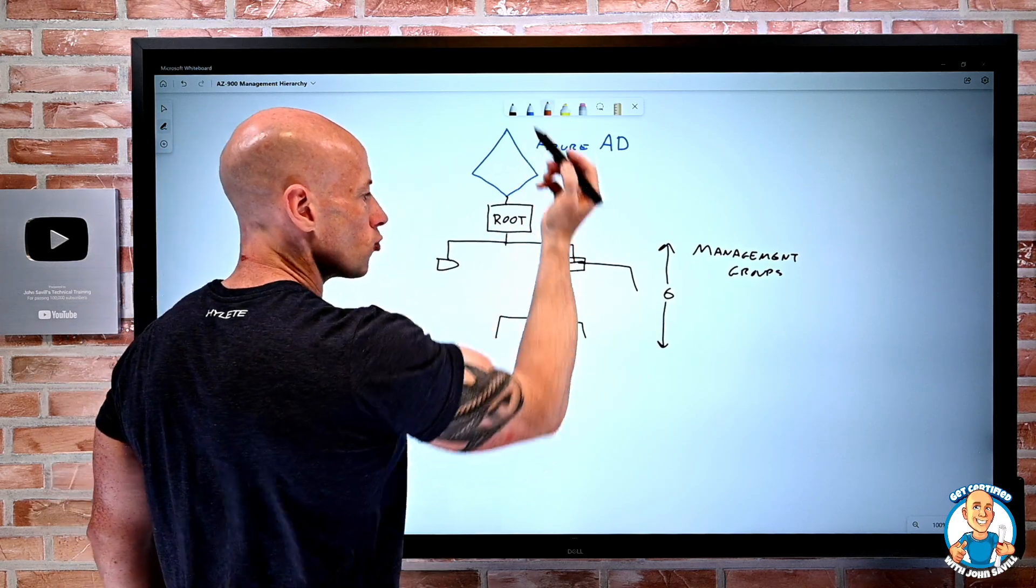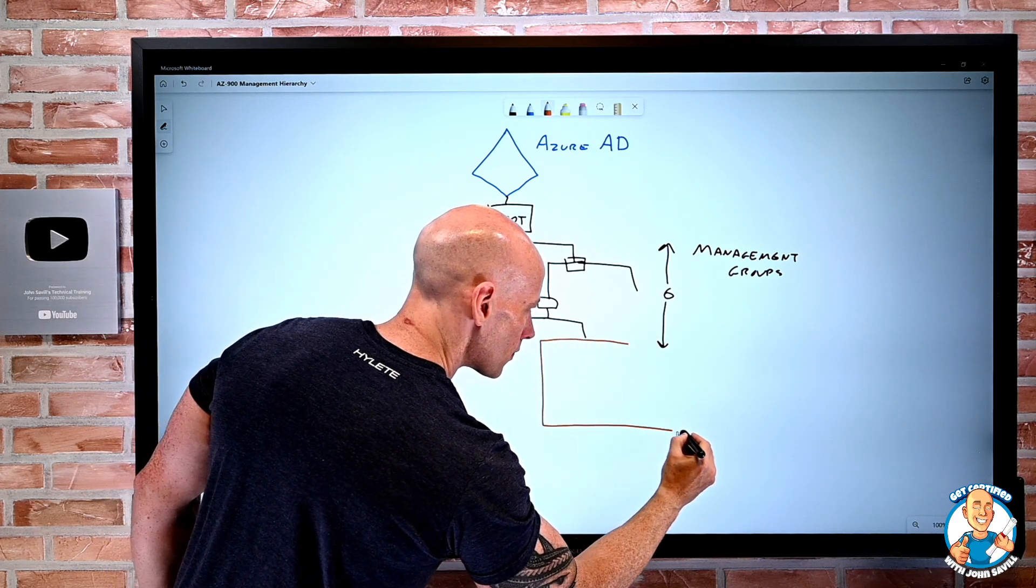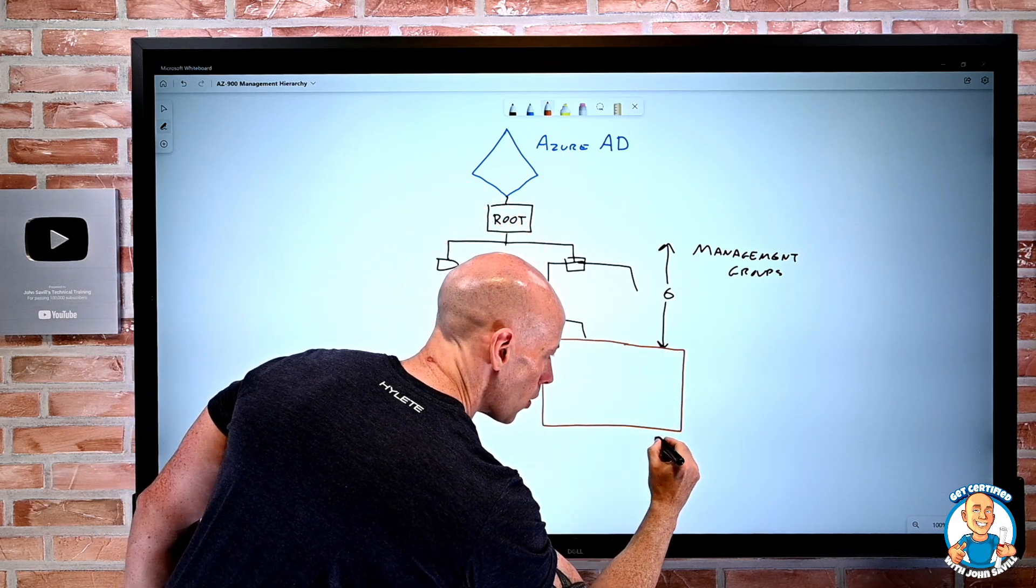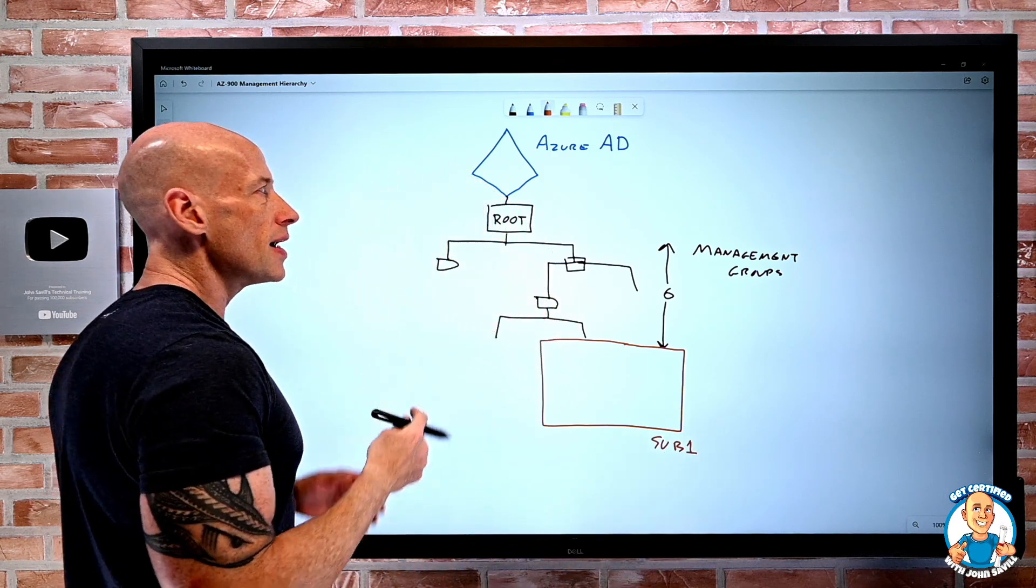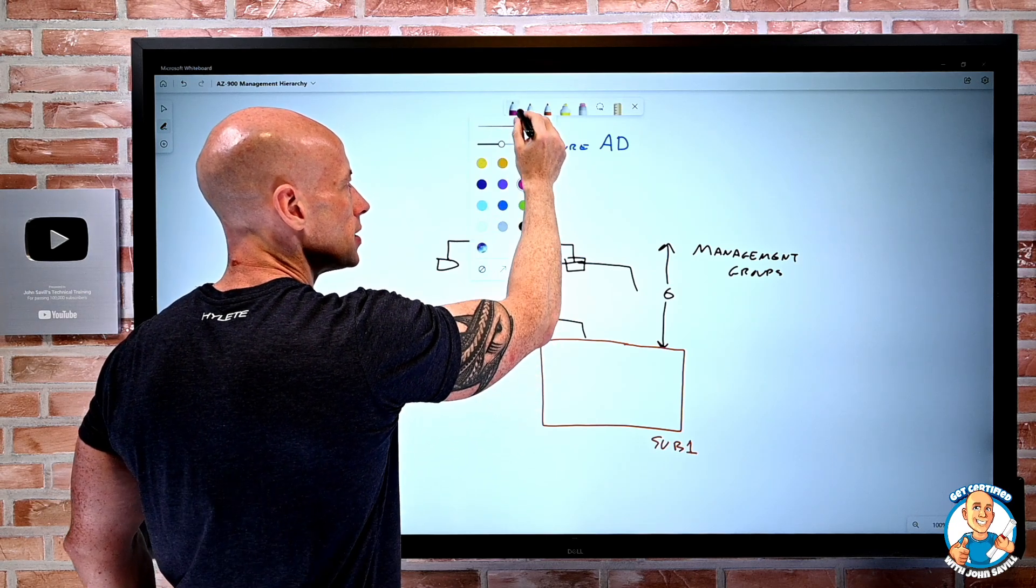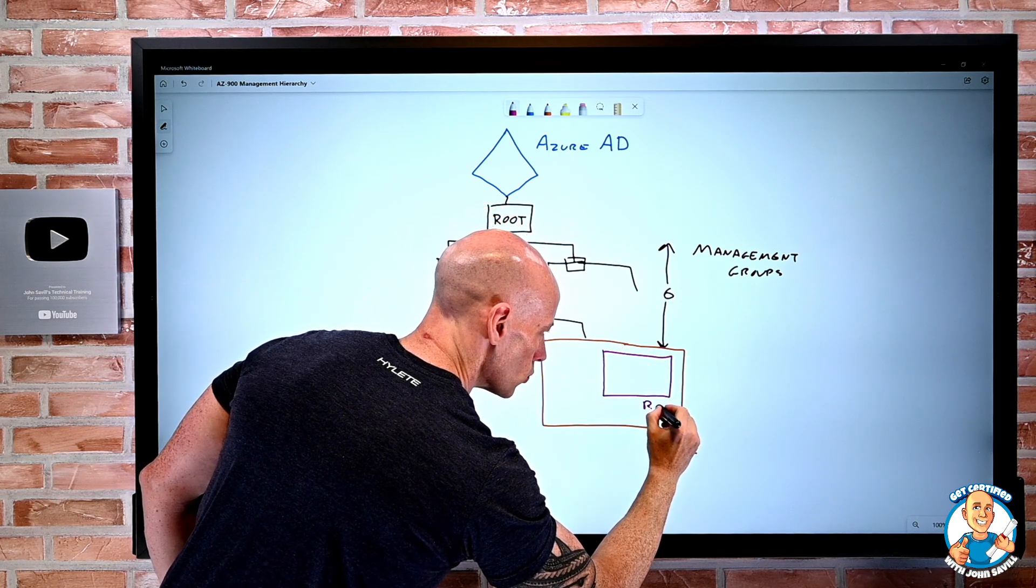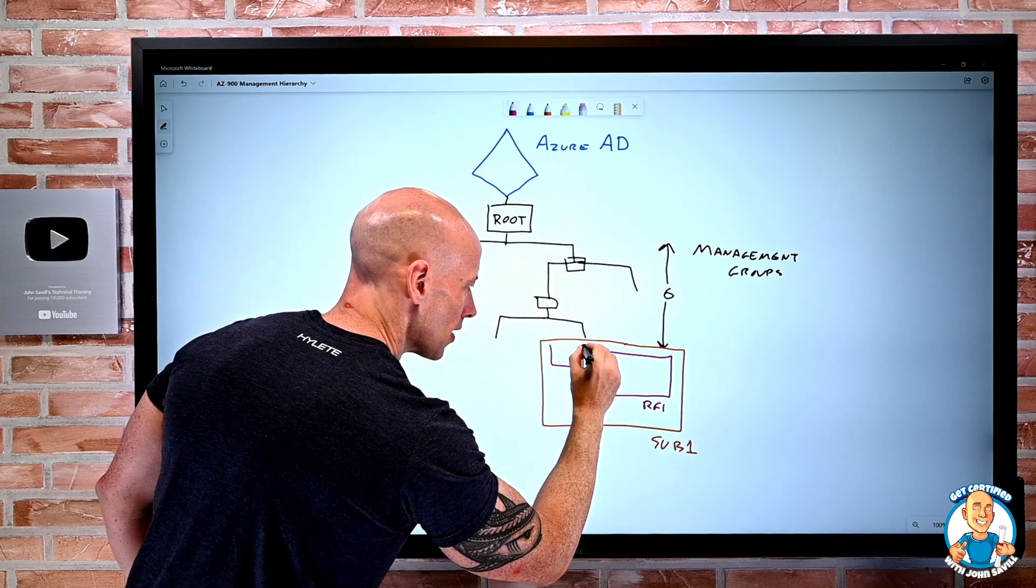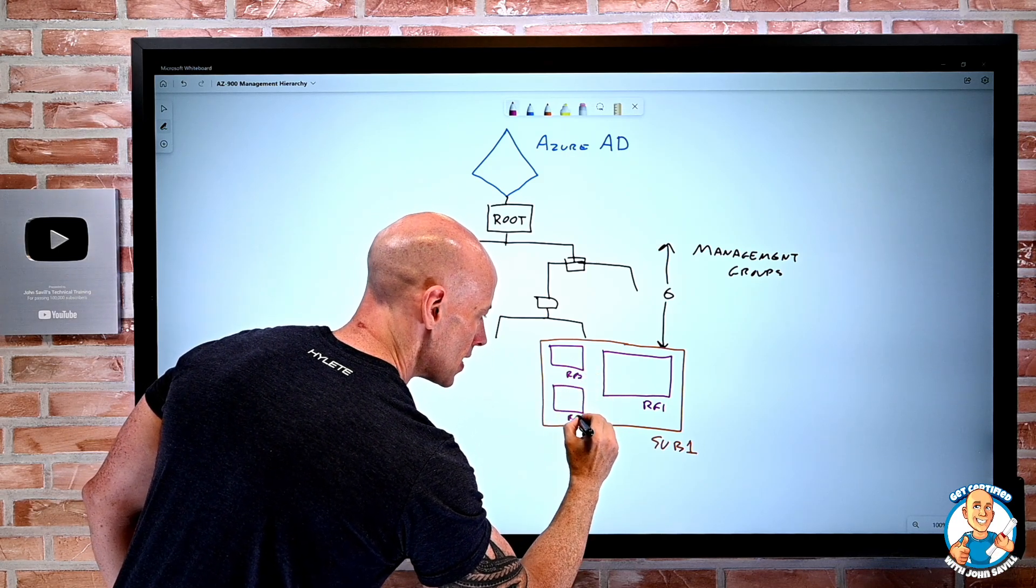Then under the management group, I'm going to have subscriptions. So we'll have multiple subscriptions. And then within our subscriptions, what we can then create are resource groups. So this could be resource group one, resource group two, resource group three, etc.